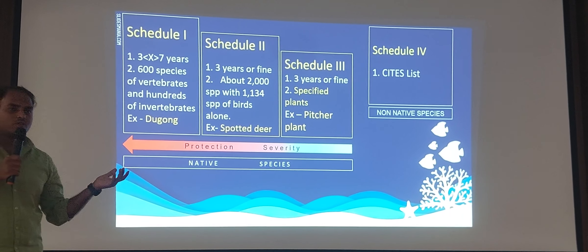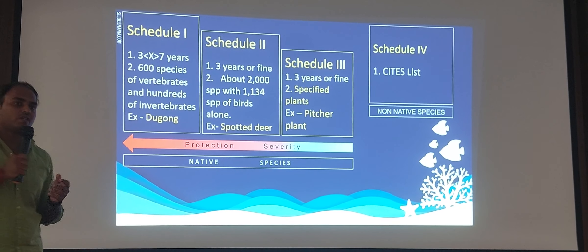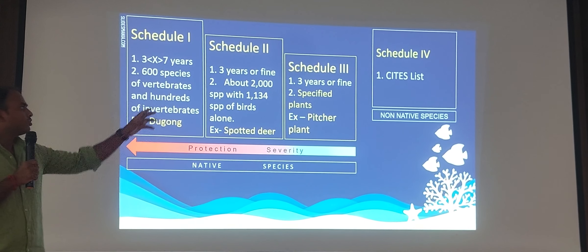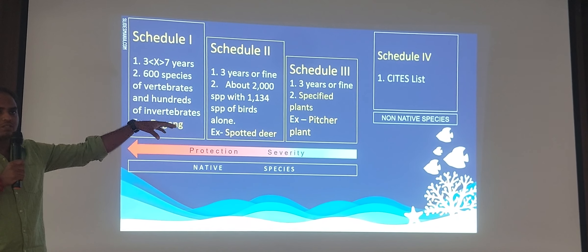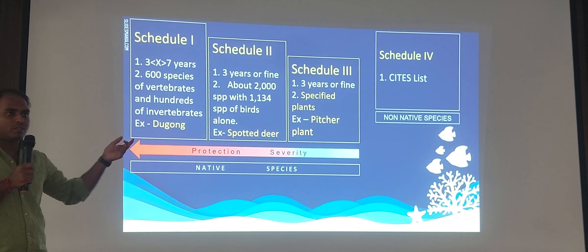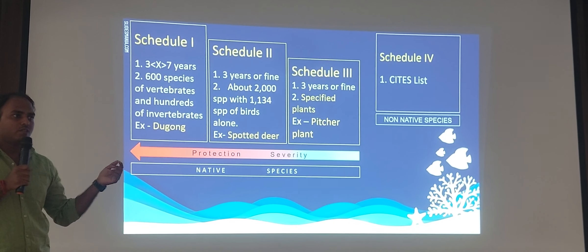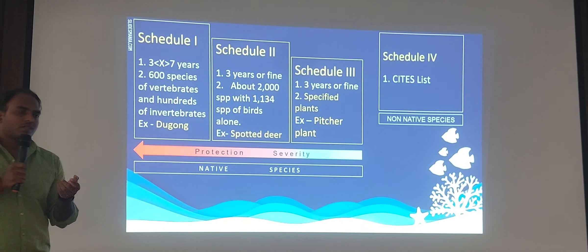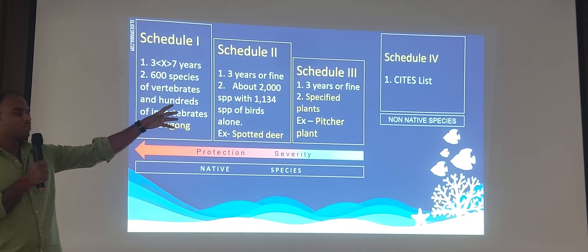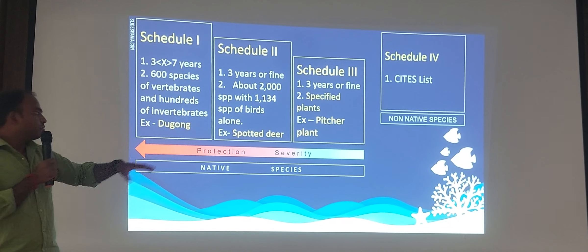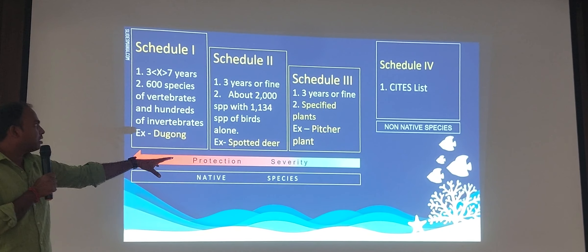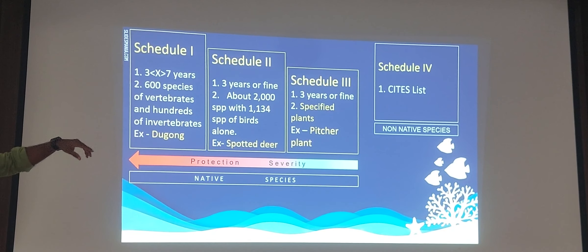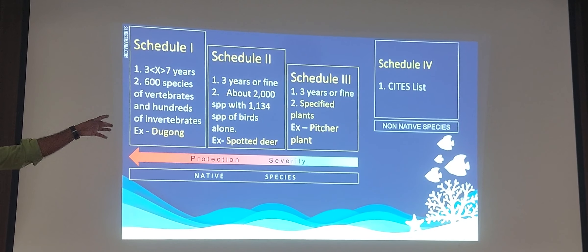Schedule 4 was introduced through the 2022 Wildlife Protection Amendment Act and includes the CITES species list. Schedule 4 consists of species from other countries — for example, a species native to Thailand that is being protected internationally can be included in Schedule 4. So native Indian species are categorized into Schedules 1 to 3, and non-native species are categorized under Schedule 4.